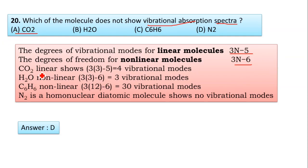It shows 3×3-5 = 4 vibrational modes. Whereas in H₂O, it is a non-linear molecule with three atoms, so 3×3-6 = 3 vibrational modes. You take C₆H₆ benzene—it is also a non-linear molecule. 3×12-6 = 30 vibrational modes shown by benzene.